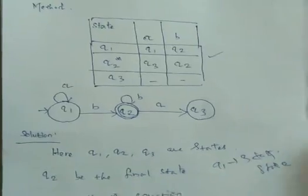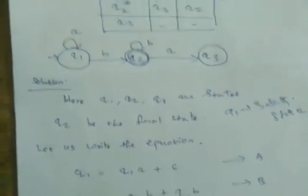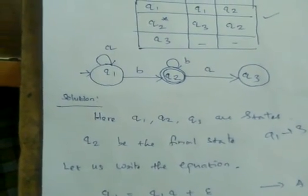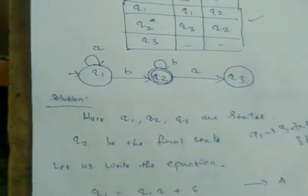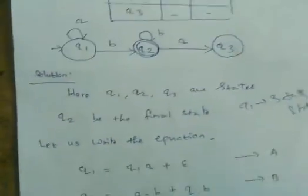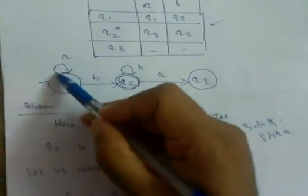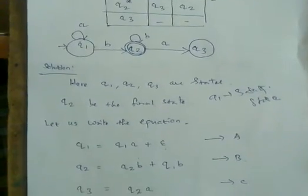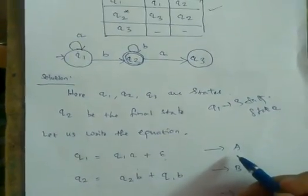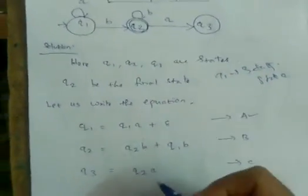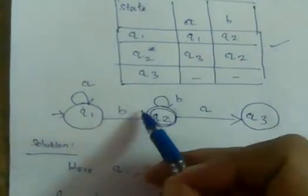For a particular state, we look at what are the incoming transitions from the other states. For q1, the incoming transition is from q1 itself, so q1 = q1·a + ε, where ε is the default transition. We name this equation A. For q2, the incoming transitions give q2 = q2·b + q1·b. We name this equation B. For q3, q3 = q2·a. We name this equation C.